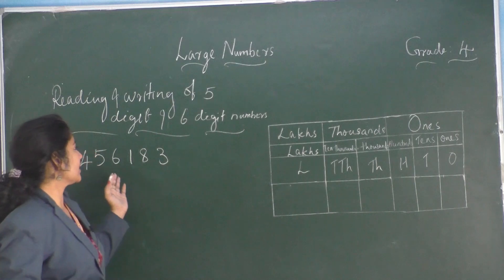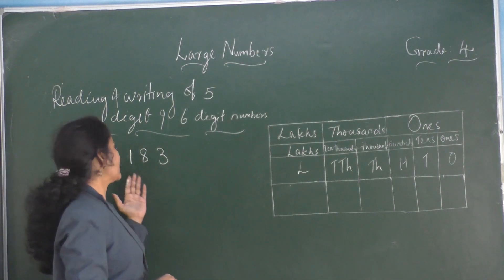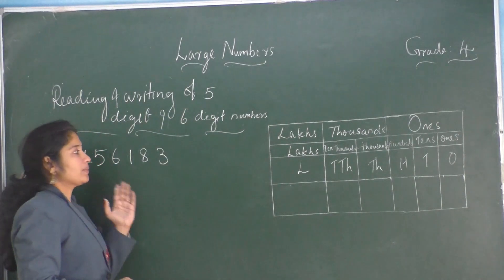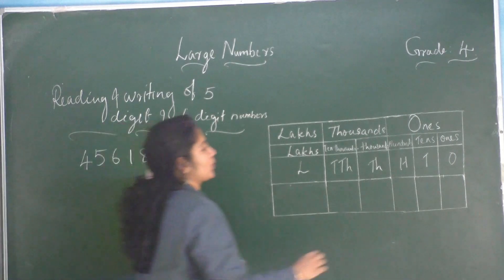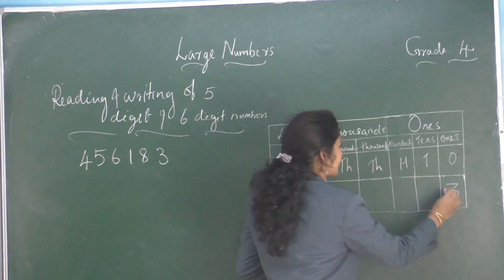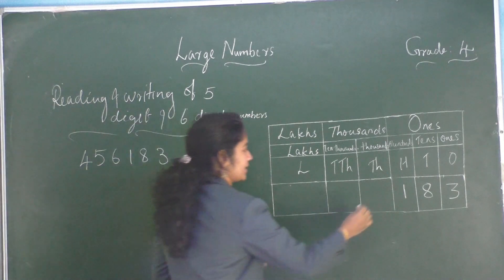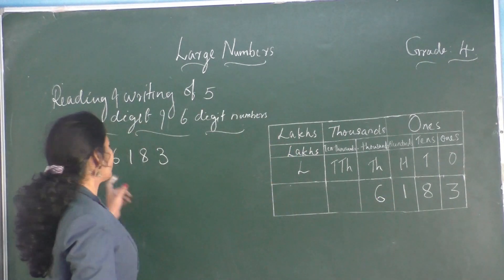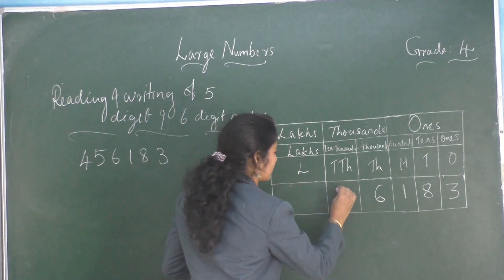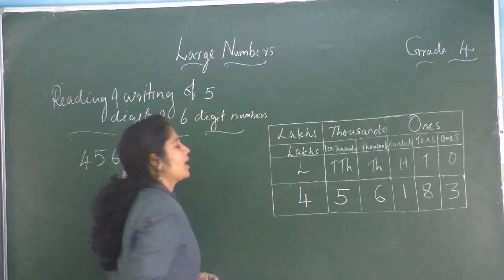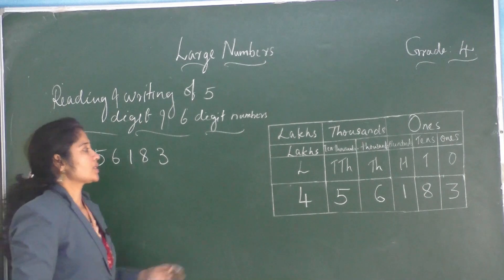Now let's write the place value of each digit in expanded form. We can write this number in a place value chart. We write from right to left. So three goes at the ones place, eight at the tens place, one at the hundreds place, six at the thousands place, and five at the ten thousands place.